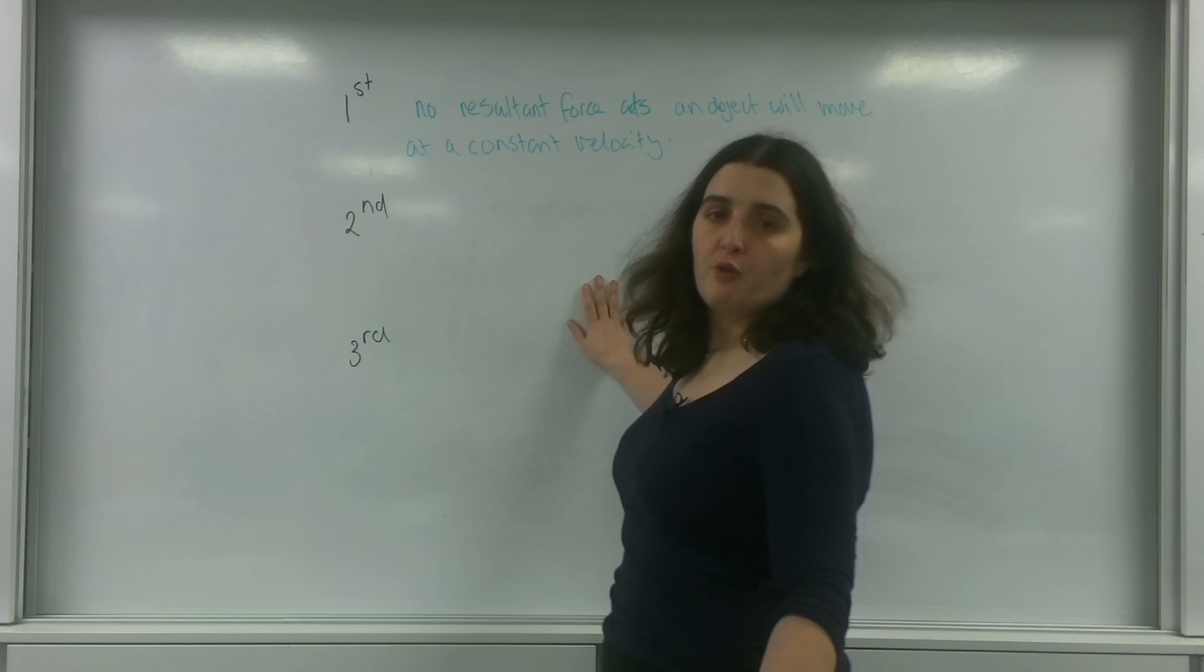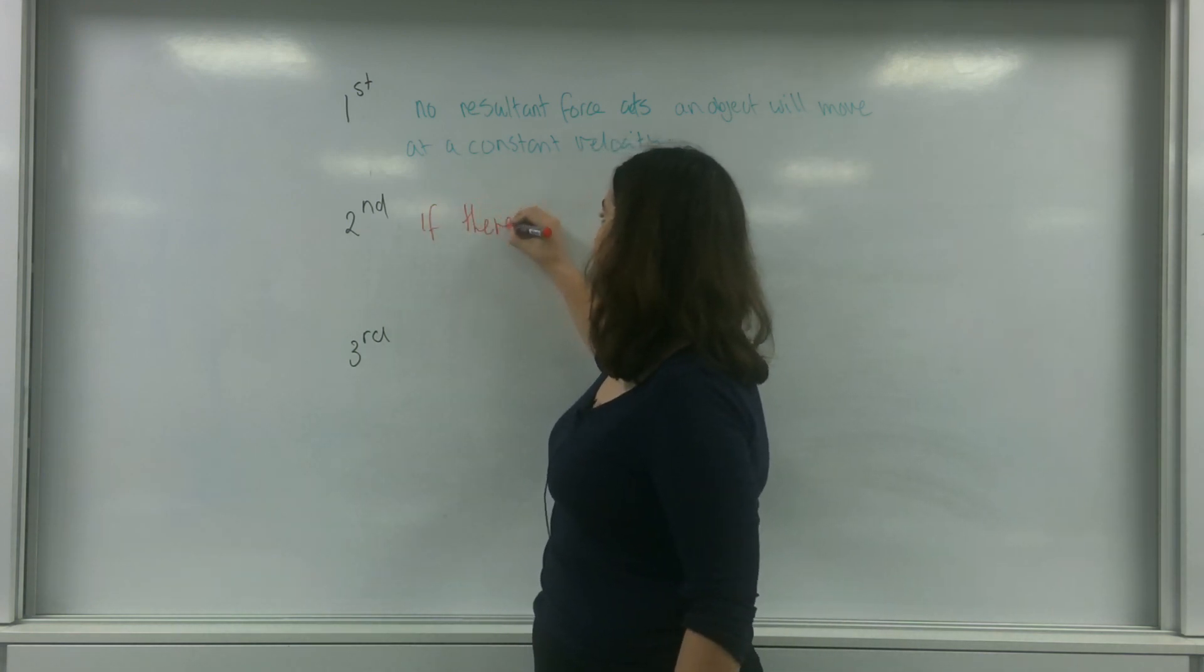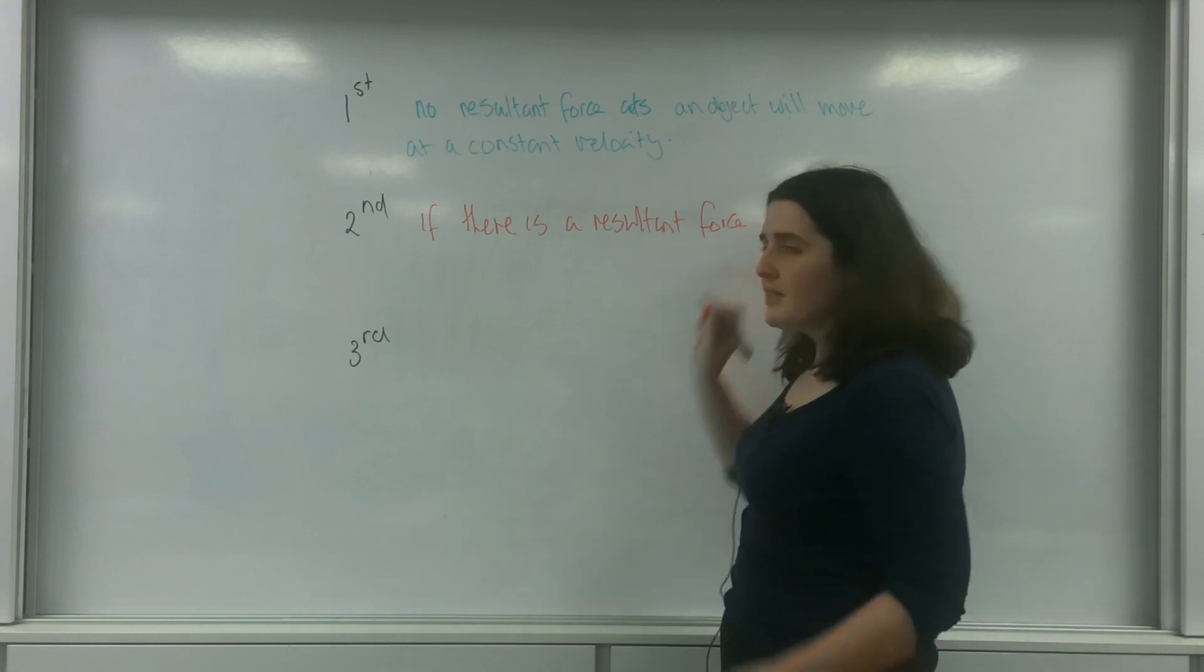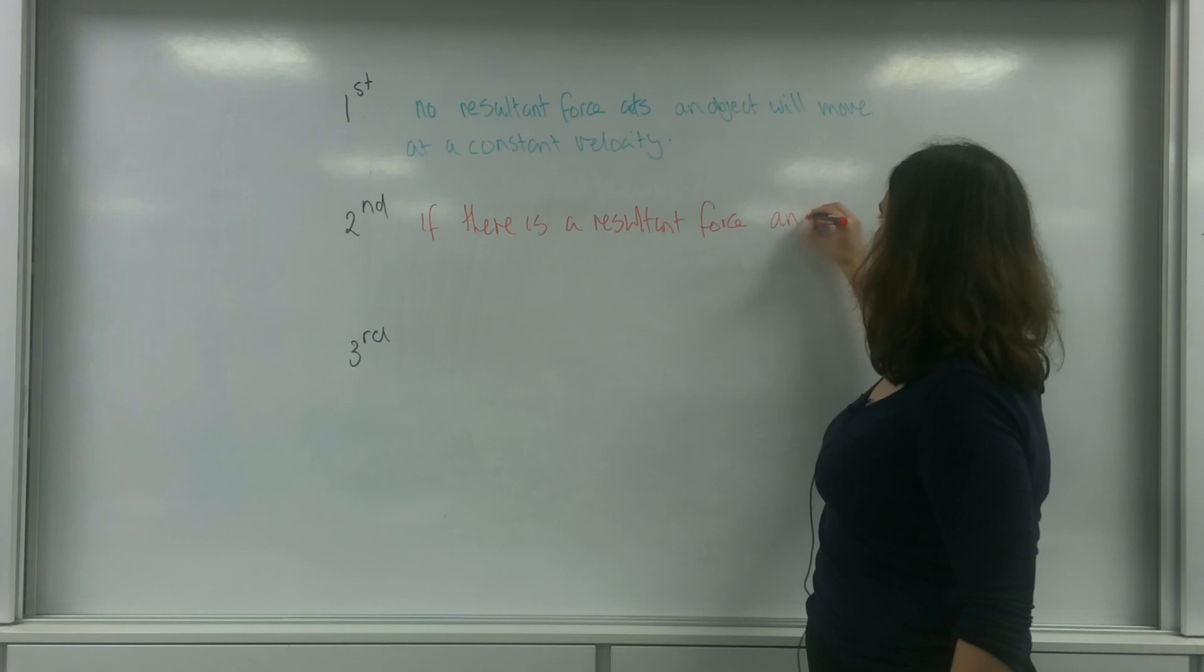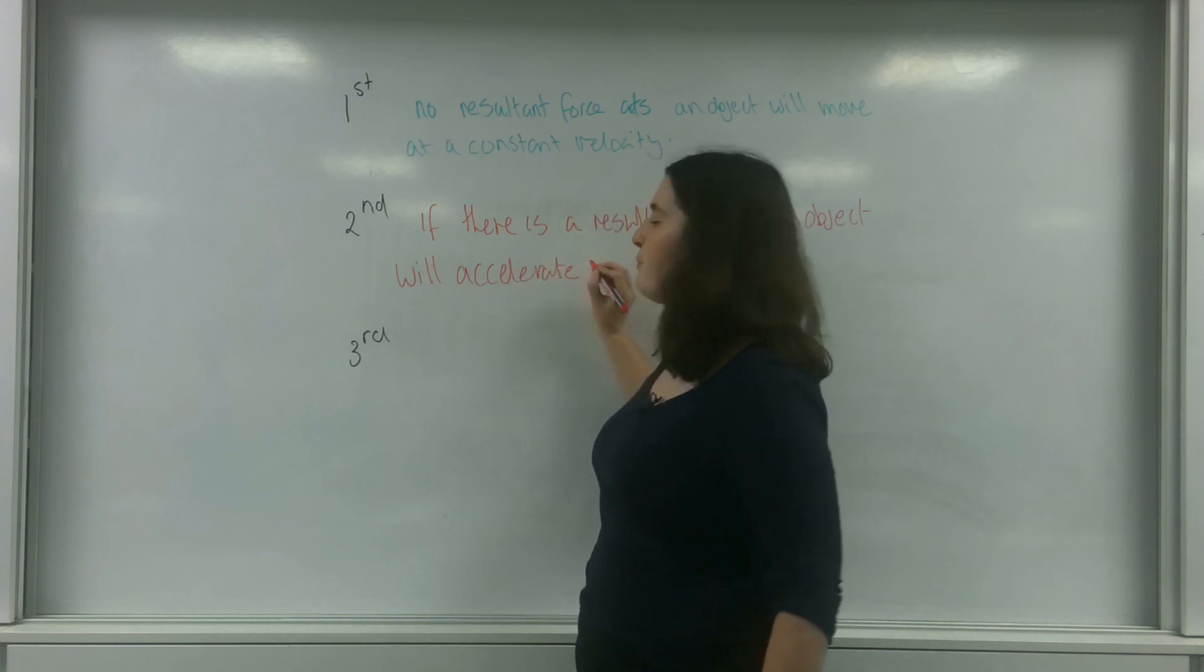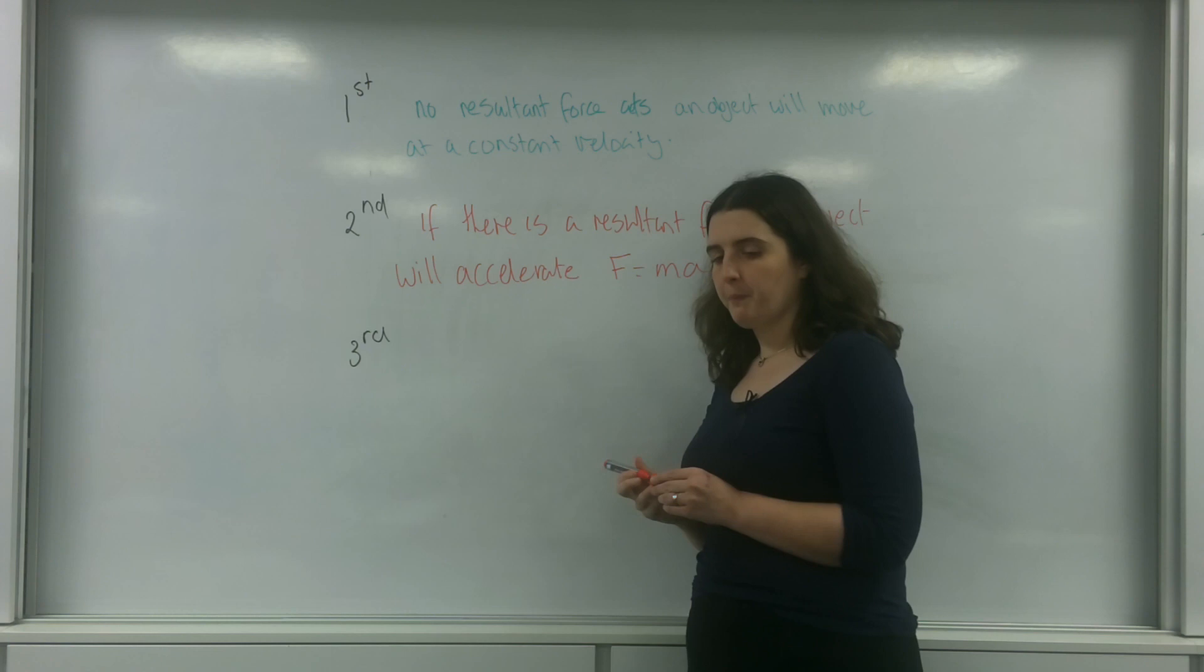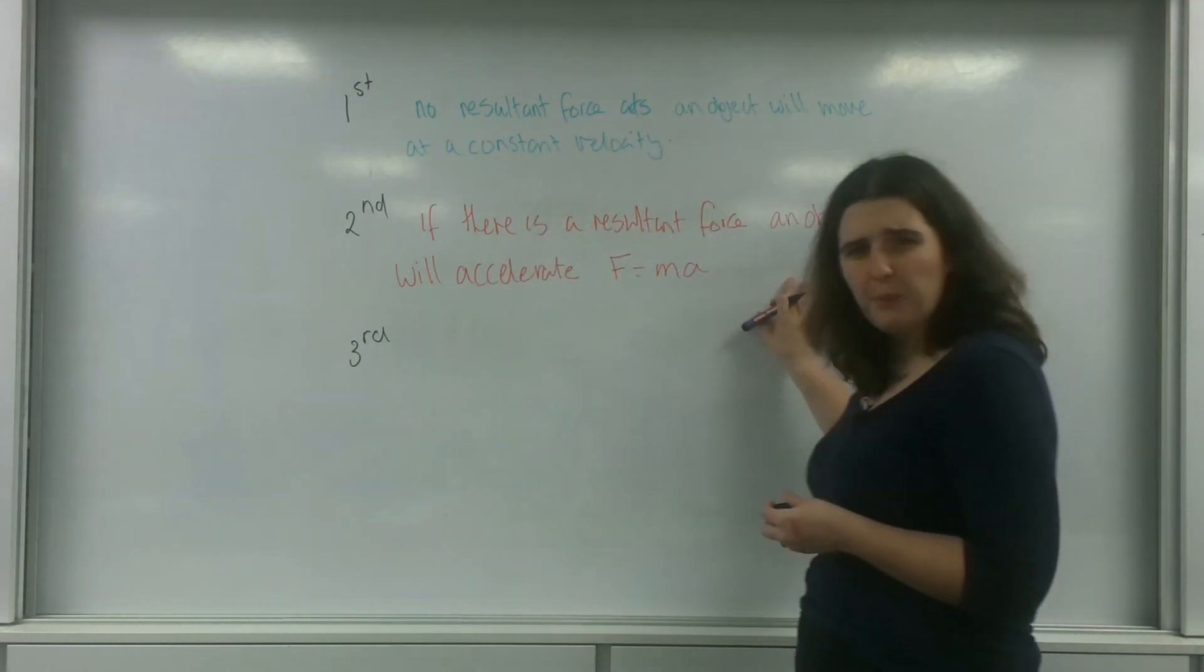Now the second law is probably the most famous. This is if there is a resultant force. So if there is an unbalancing of the forces, if there is a resultant force, an object will accelerate. And this is probably one of the most famous equations, and that is the resultant force equals the mass times the acceleration. And you're going to use this one probably the most.